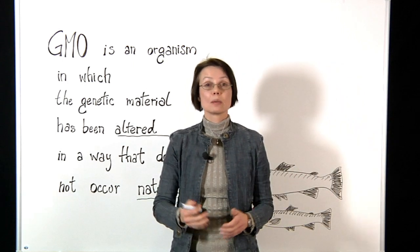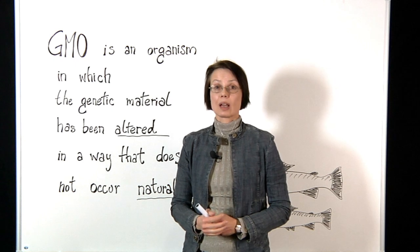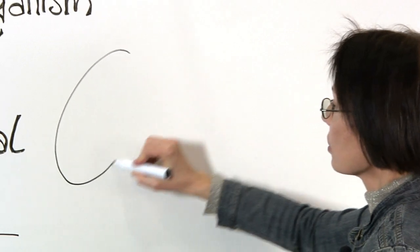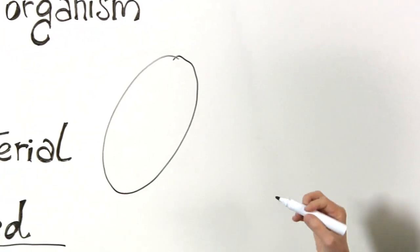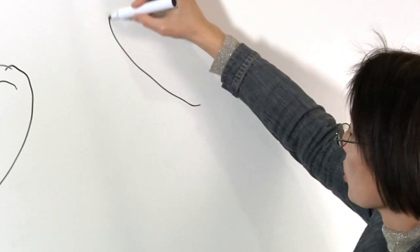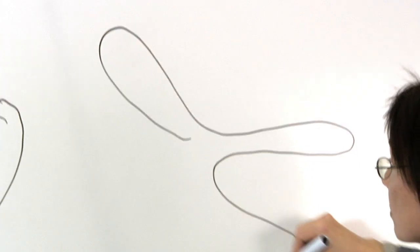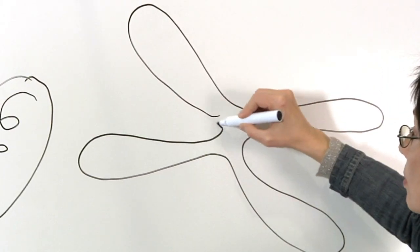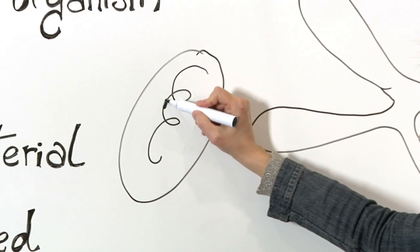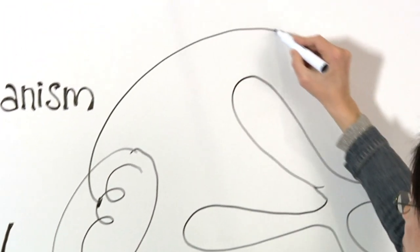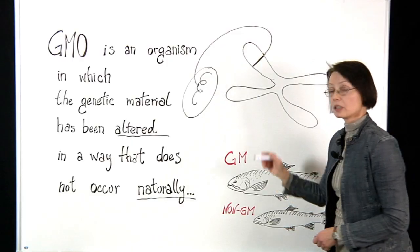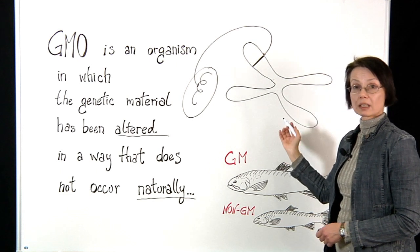So how can a GMO be created? I would like to give you a very simple example. Let's assume that this is a bacterium with its genetic material and this would be the chromosome of another organism, for example a chromosome of an animal. Scientists can take a piece of the genetic material of the bacterium and insert it into the chromosome of this animal, and this would then give rise to a genetically modified animal.